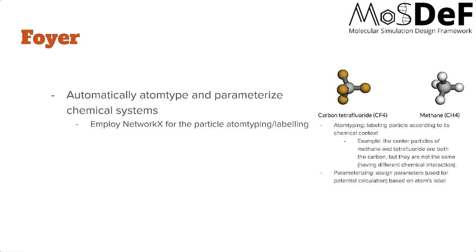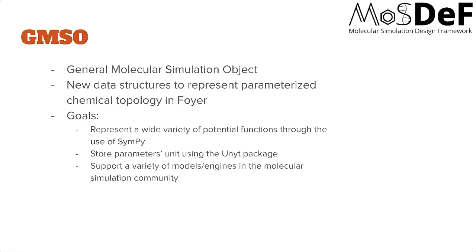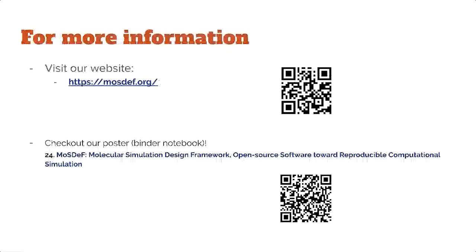Finally, there is the GMSO package, which stands for General Molecular Simulation Objects. This is the new structure to represent parameterized chemical topology in FOYER. The goals of MoSDeF are to improve reproducibility of the field, so GMSO makes no assumption over the system — storing everything explicitly — including a variety of potential functions as simple expressions, all units of parameters via a units package, and supporting as many writer formats as possible for different simulation engines. If you want to learn more about MoSDeF, please visit our website at mosdef.org, and check out my poster.